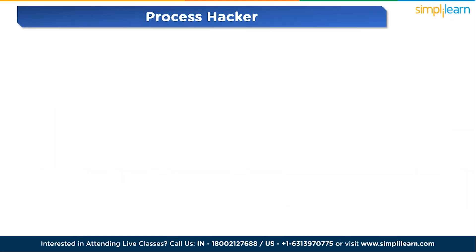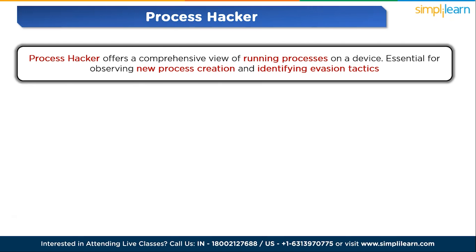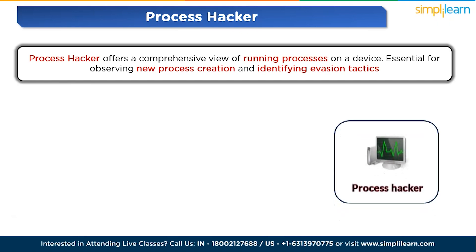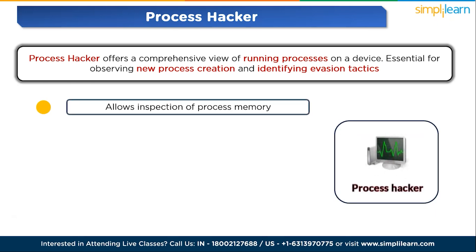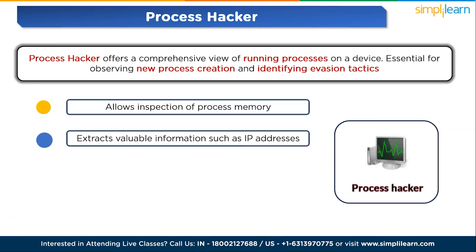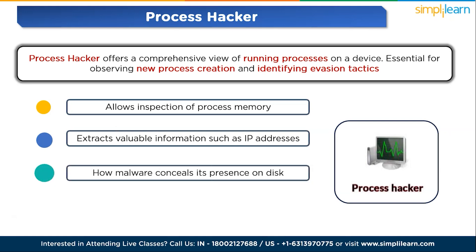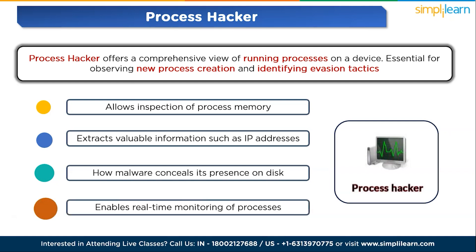The second tool is Process Hacker. Process Hacker offers a comprehensive view of running processes on a device, and is essential for observing new process creation and identifying evasion tactics. For memory inspection, it allows inspection of process memory for strings post malware detonation, extracting valuable information such as IP addresses, domains, and user agents. It also detects malware attempts to hide by copying and renaming itself, providing a clear depiction of how malware conceals its presence on disk. This tool enables real-time monitoring of processes, aiding in the identification of malicious activities and patterns.